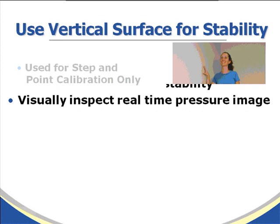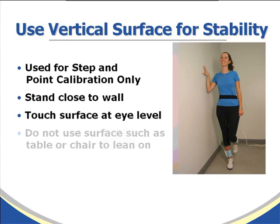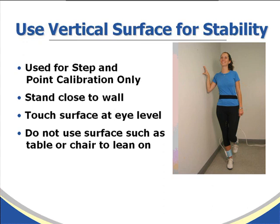Here are a few tips to optimize accuracy of your calibration. You can use a vertical surface for stability — this is for step and point calibration only. Stand close to the wall and touch the surface at about eye level. You do not want to use a surface such as a table, because you'll lose some of the vertical force and won't have a very accurate calibration.